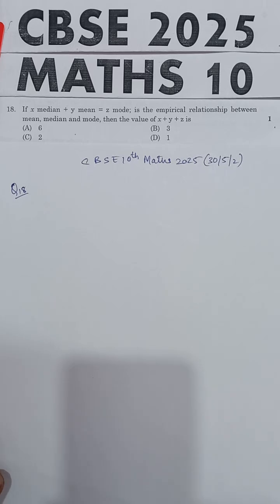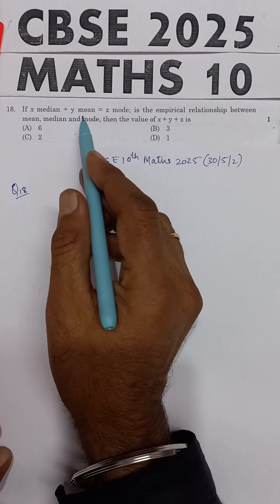This question is from CBSE 10th Maths 2025 examination. The statement of the problem says: if x times the median plus y times the mean is equal to z times the mode